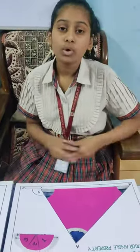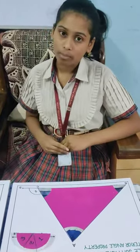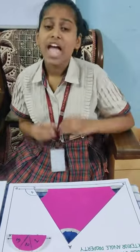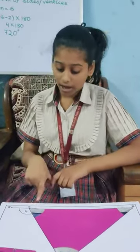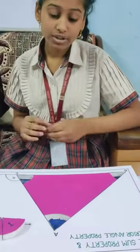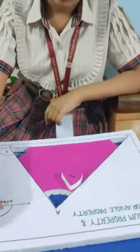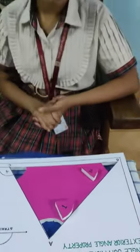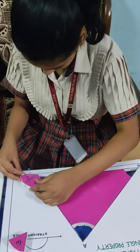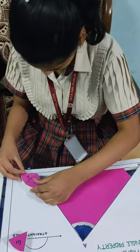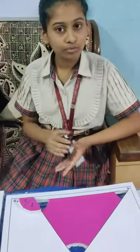Next, I want to describe the exterior angle property of a triangle. The exterior angle property of a triangle states that the exterior angle is equal to the sum of its two opposite interior angles. In this model, angle 4 is the exterior angle and its two opposite interior angles are angle 1 and angle 2. Let me join these two angles at angle 4. As we can see, angle 4 is equal to the sum of angle 1 and angle 2.